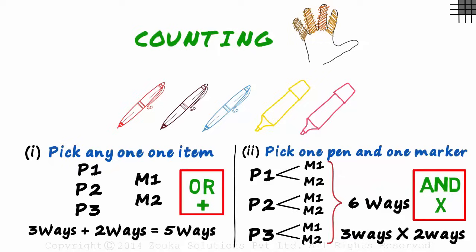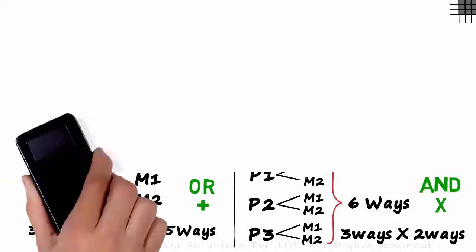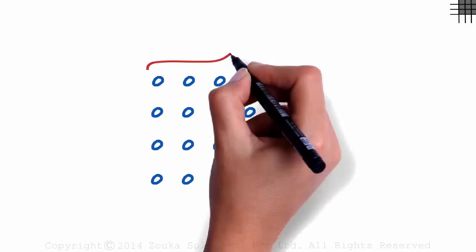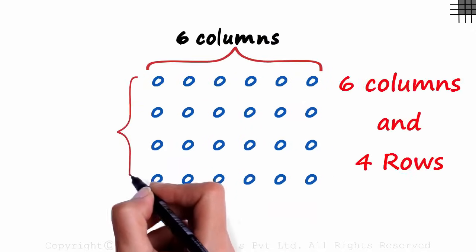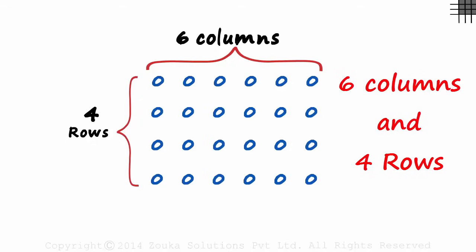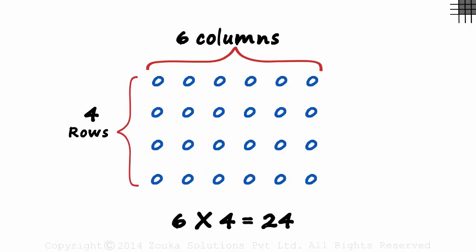And this is nothing new. I am sure you have used this many times in life. Look at this picture. How many circles do you see? I doubt you counted each circle. Instead of counting each circle, you would have noticed that there are six columns and four rows. Because it's AND, the number of circles will be six multiplied by four, twenty-four in all. Don't forget the two basic rules.